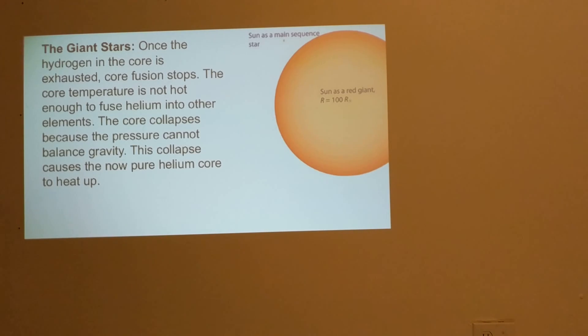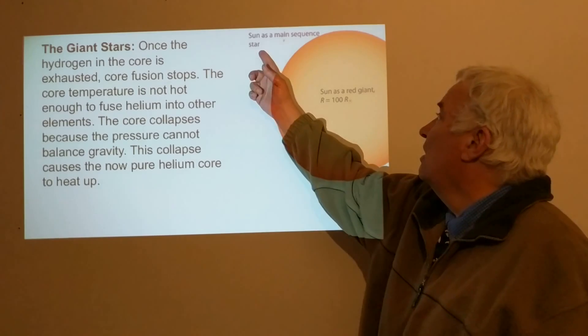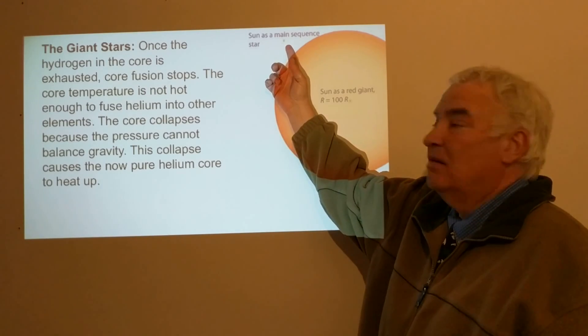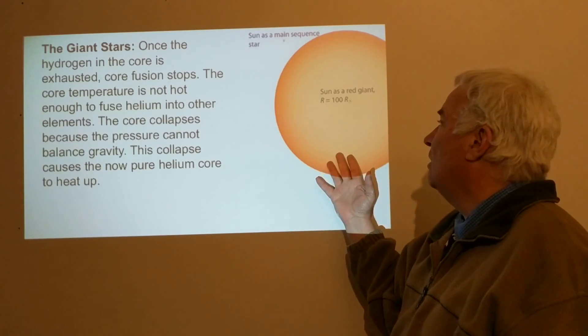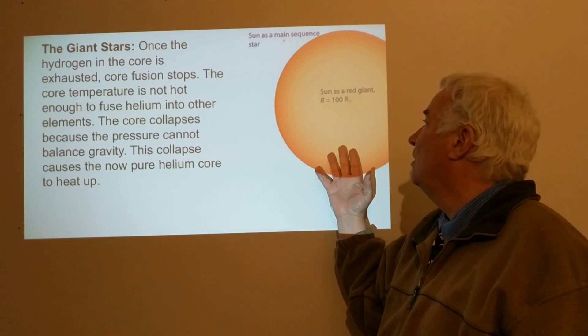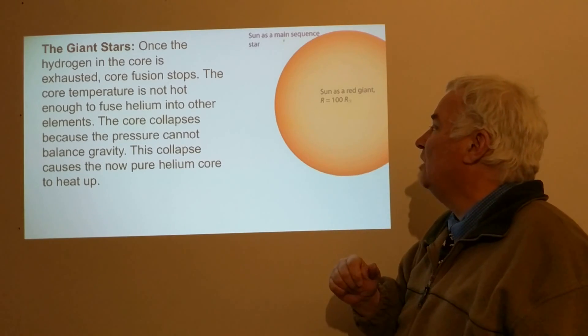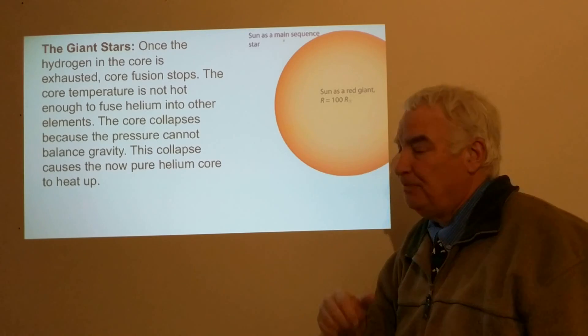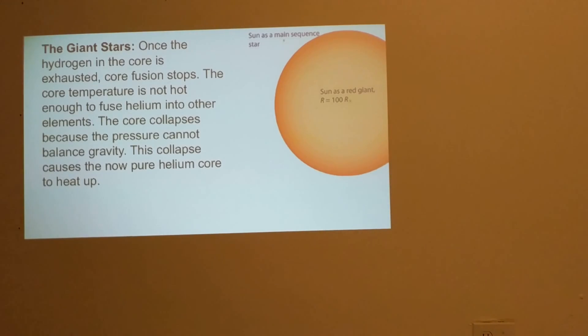The Sun as a main sequence star is very small compared to the Sun as it will be, a hundred times larger when it is a red giant star. The process will take place for the Sun in about five billion years.